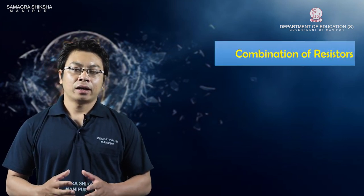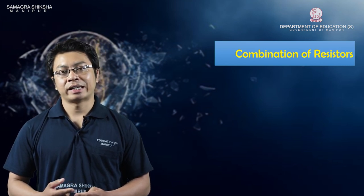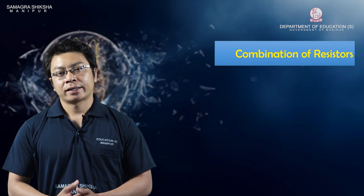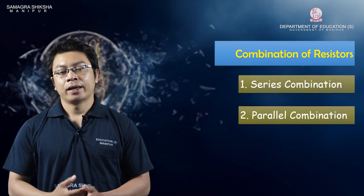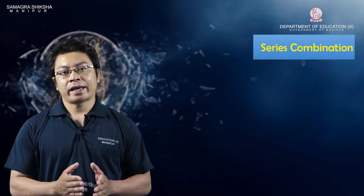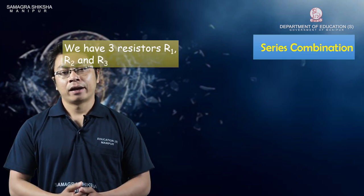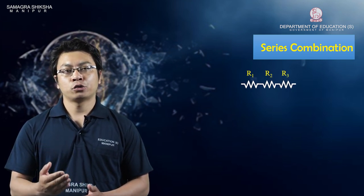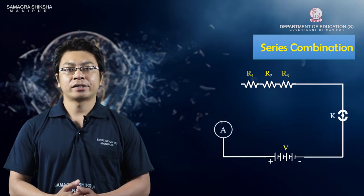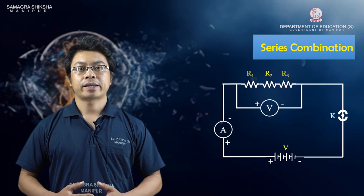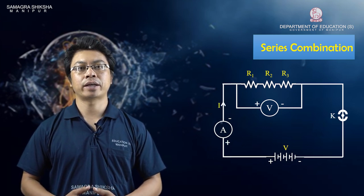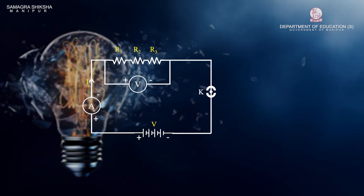Next is the combination of resistors. There are different devices like radio or television where resistors are combined. If the resistors are all combined, there are series combinations and parallel combinations. In series combinations, resistors are connected end to end. For example, resistors R1, R2, R3 are connected in series — R1 connected to R2, and R2 connected to R3.